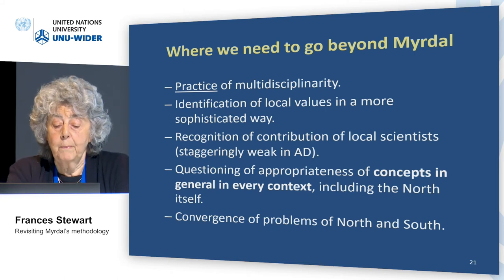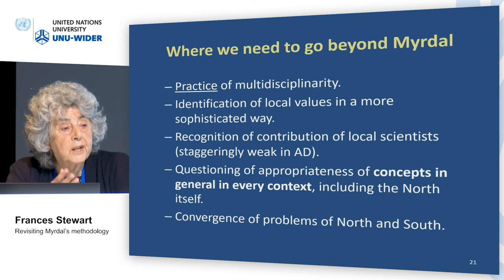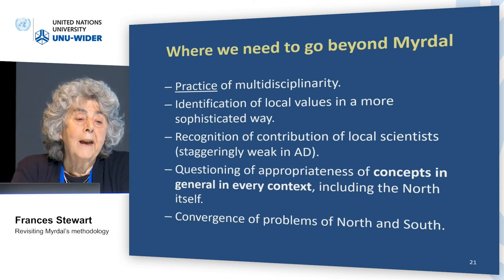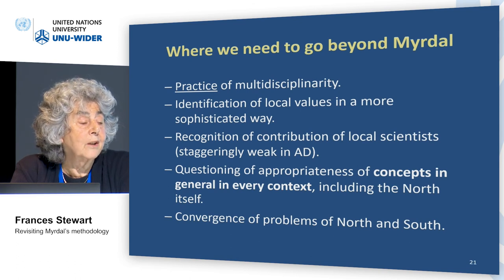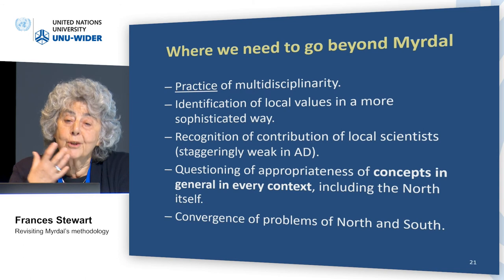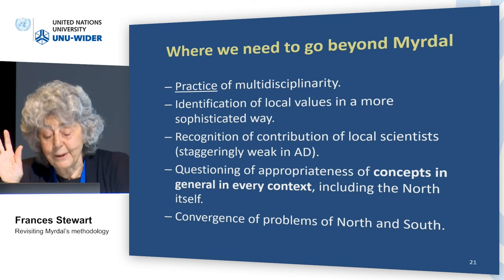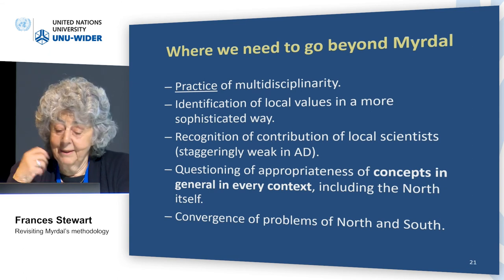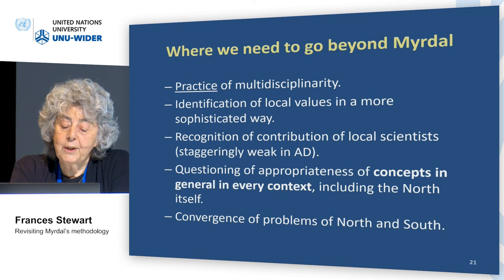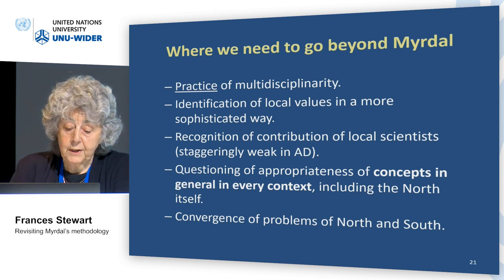Let me move on to where we need to go beyond Myrdal. We need to work on the practice of multidisciplinarity. We need to identify local values in a more sophisticated way, and we need to recognize the contribution of local scientists. I was really shocked writing this paper — I began getting into early 20th century Indian economists, and they'd made all these points, and they were not even referred to in Asian Drama. In a book which is talking about the importance of local values, I found it totally shocking. Even word for word — the importance of institutions, the irrelevance of Western concepts, and even the five elements and the interconnectedness — they were all there. I think we need to question the appropriateness of concepts in every context, not just in the South but in the North too. And of course, there's been a convergence of problems of North and South. Thank you.